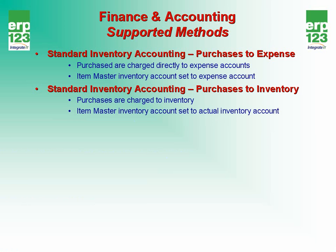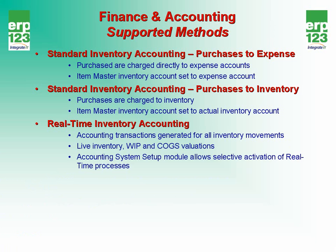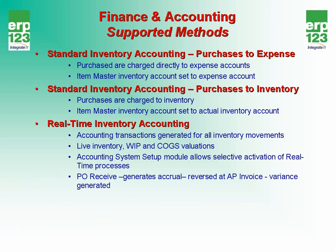In real-time inventory accounting, accounting transactions are generated for all inventory movements. This results in live inventory, work in process, and cost of goods sold valuations. The accounting system setup module allows you to selectively activate real-time inventory accounting processes. There are several: PO receive, which generates accruals — these accruals are reversed at AP invoice and variances are generated. There is also shipping accruals, known as bill and hold, and these shipping accruals are reversed when AR invoices are created.